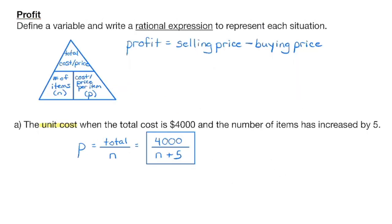Profit is another relationship. We find profit by figuring out what we're selling items for minus how much it cost to buy the supplies. For example, if I sell a batch of cookies for $20 but it costs $10 to purchase all the ingredients, I have a profit of $10. Normally a question gives us the profit per item: selling price of one item minus the cost to produce that one item. The cost per item is what we call the unit cost.